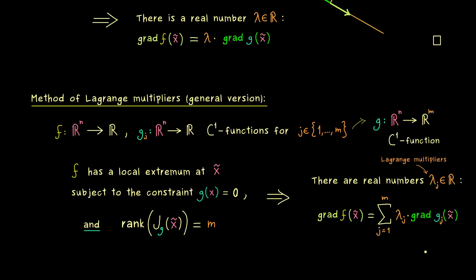So the name is exactly the same. But now we have to remember that we need as many Lagrange multipliers as we have constraints. And also that we have a whole linear combination here for the gradient of f at the point x̃. And now I can tell you that we can simply adapt the proof from before for this general version as well.